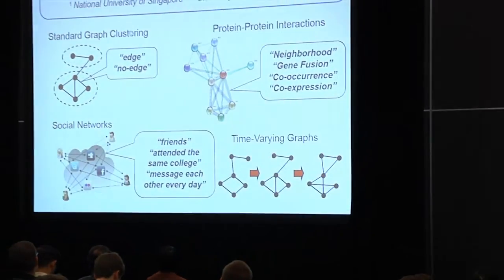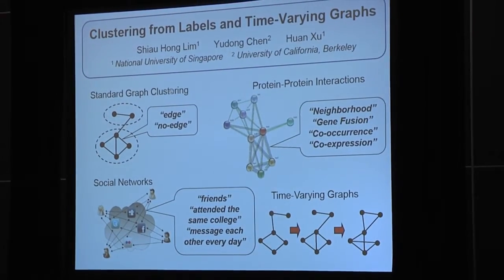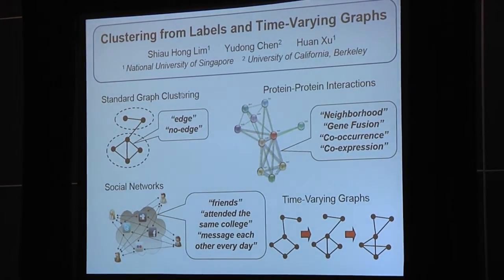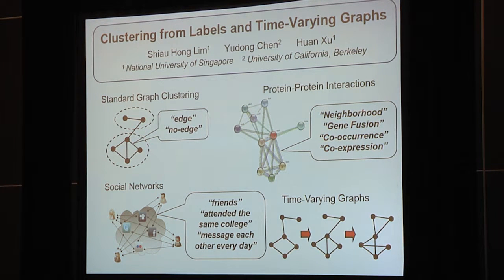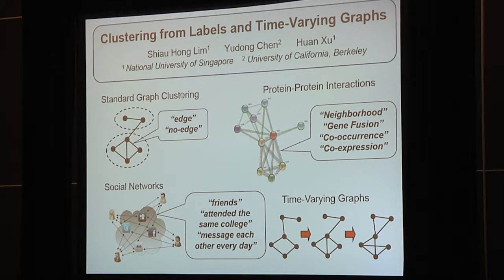Now we're going to have Xiao Hong Lim, who is going to talk about clustering from labels and time-varying graphs. Thank you. This is joint work with Yu Dong Chen and Huan Xu. We consider the problem of graph clustering where we look for a partitioning of a set of nodes that maximizes some objective functions such as density. Traditionally, given a pair of nodes, the kind of observation we have is whether there is an edge or no edge between the two nodes.